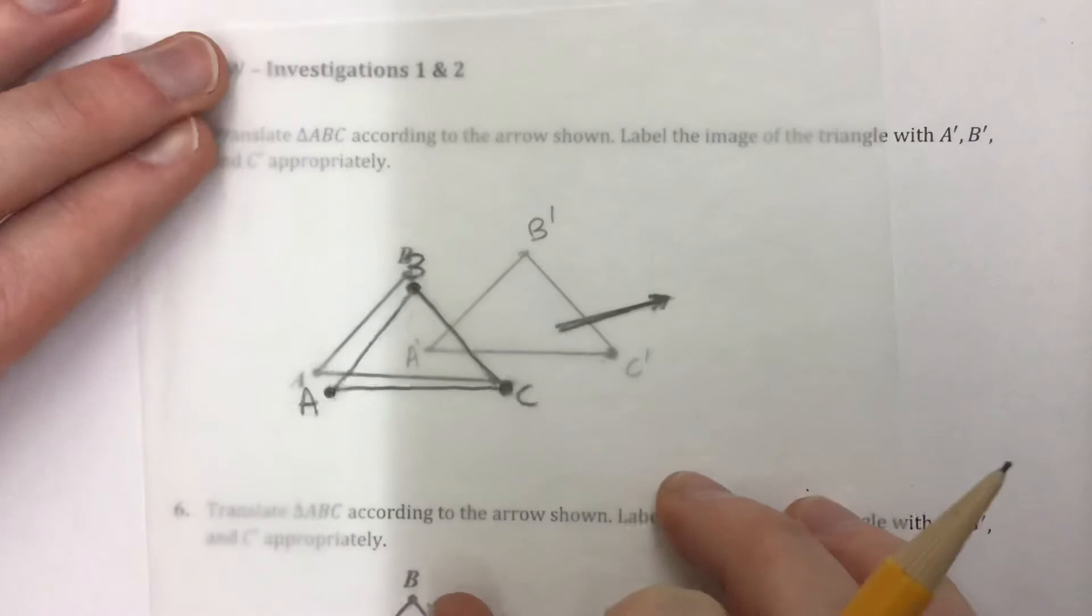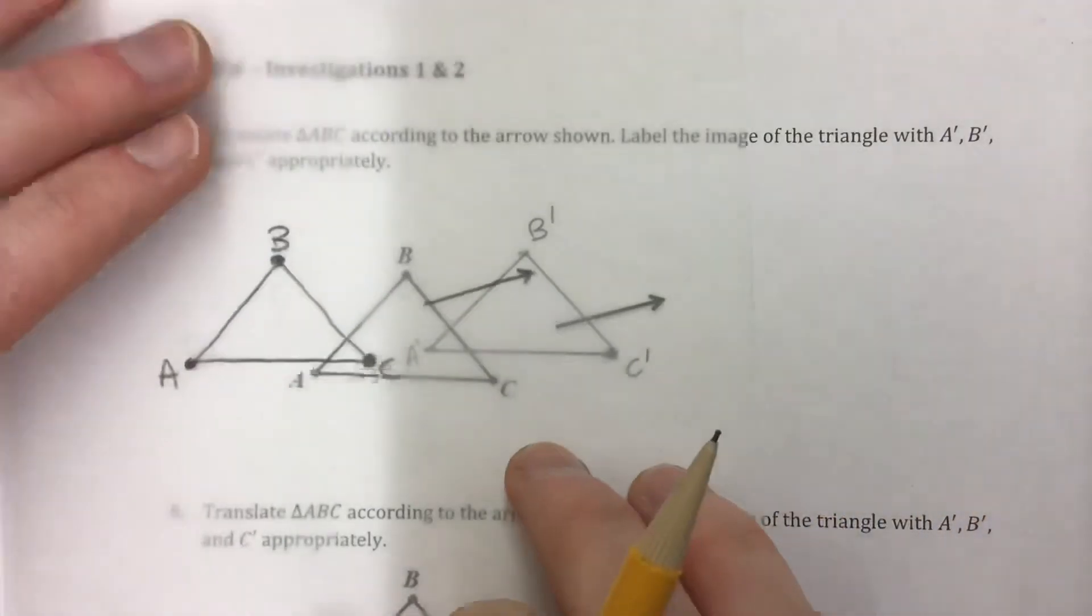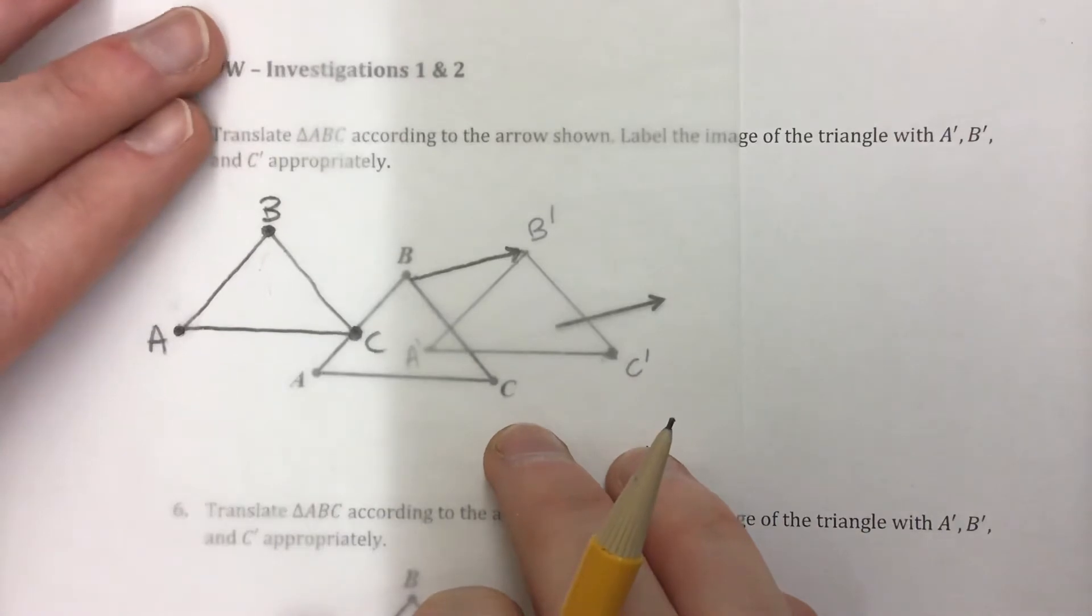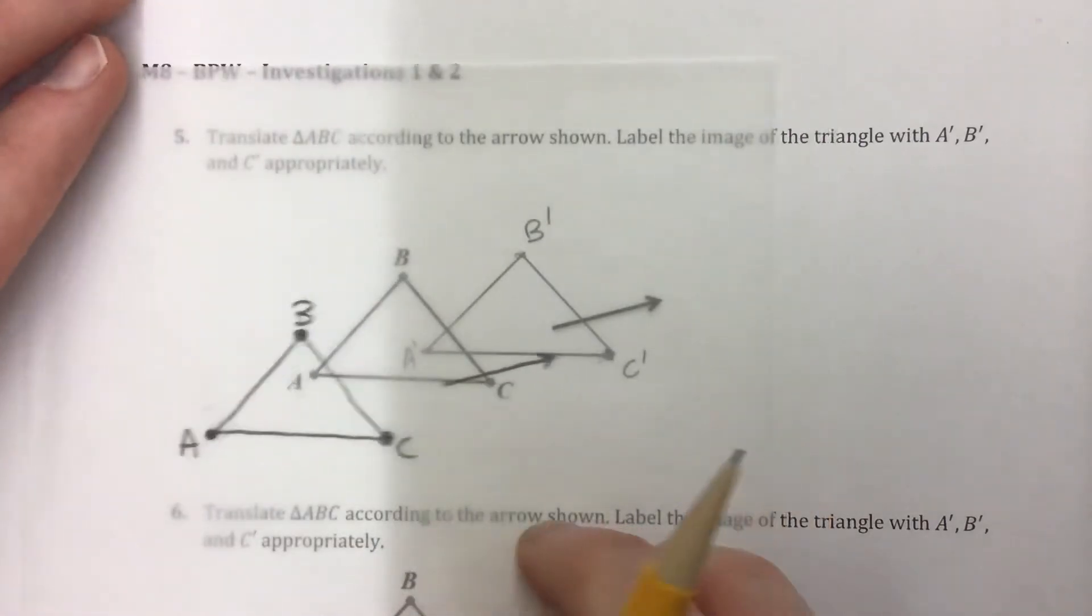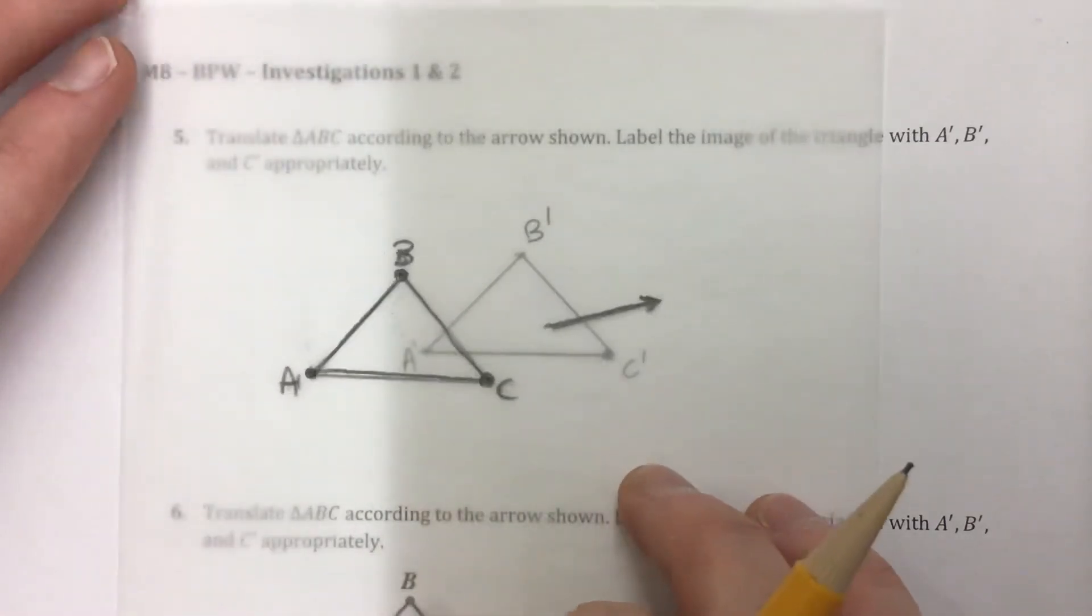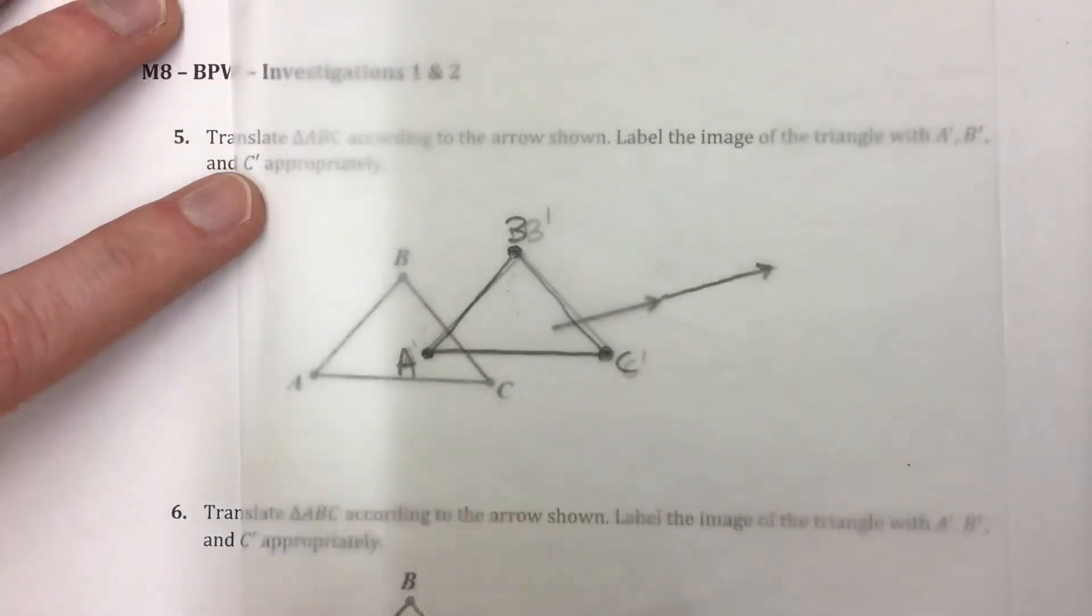We can check to see if we're right because the arrow should be how far we go and the direction. So let's just line up our points and see if we get it right. From B to B prime you can see the arrow lines up there. A to A prime and C to C prime. So all of those points move the right distance and the right direction based on that arrow or that vector. We also call that arrow a vector.